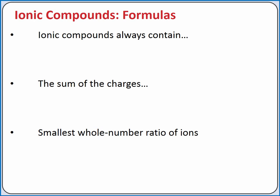When creating the formula for an ionic compound, we should keep a few things in mind. First, ionic compounds always contain both cations and anions because they must be electrically neutral. This means the sum of the charges of the cations and anions in the formula unit should equal zero. And the formula unit is the smallest whole number ratio of ions that produces an electrically neutral ionic compound.